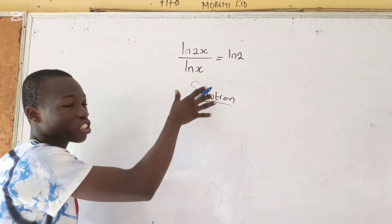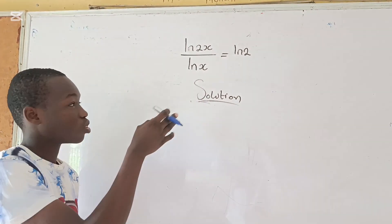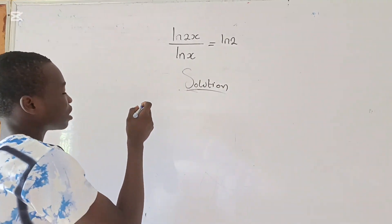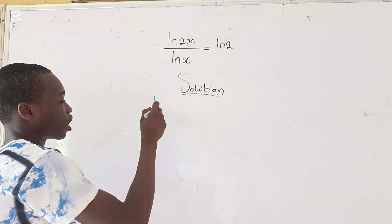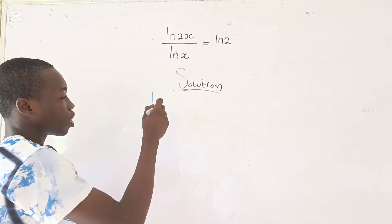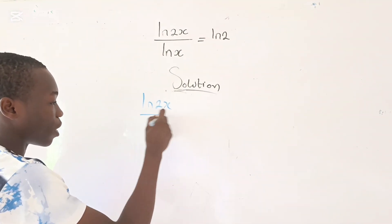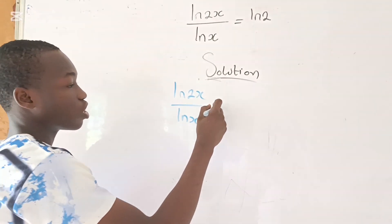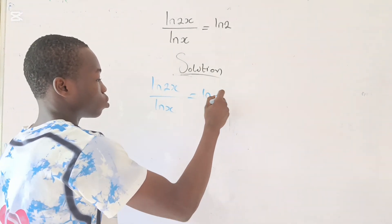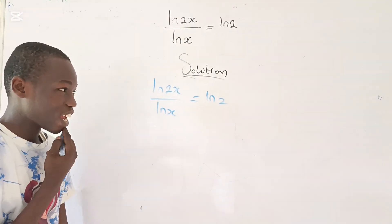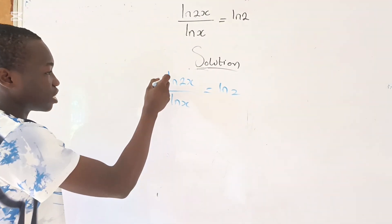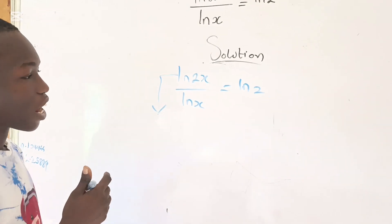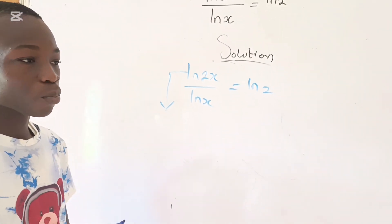Now, looking at this logarithmic equation, how do you solve for the value of x? First, let's write the equation out again. You have the natural log of 2x divided by the natural log of x equals the natural log of 2. Now, looking at this, we can simplify this by using the log addition property.